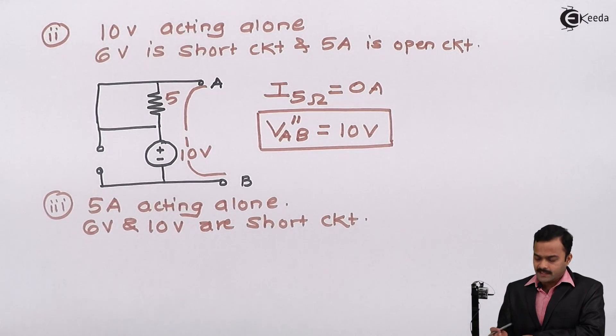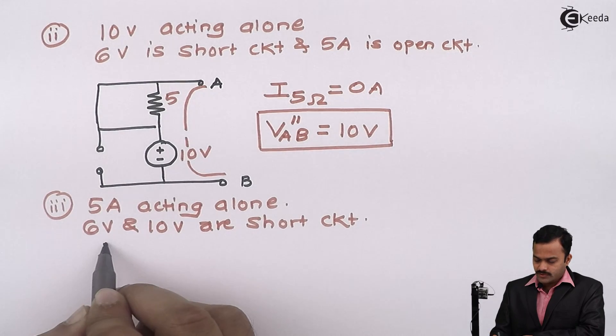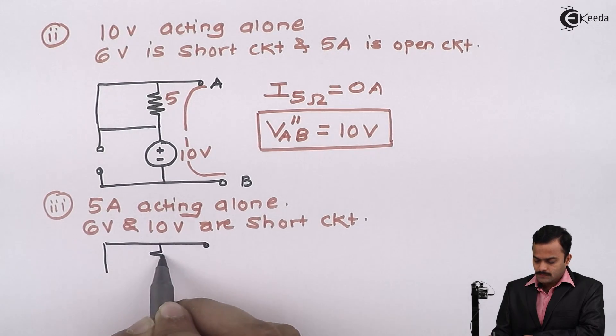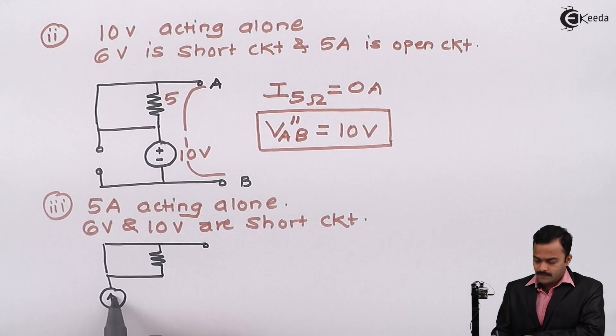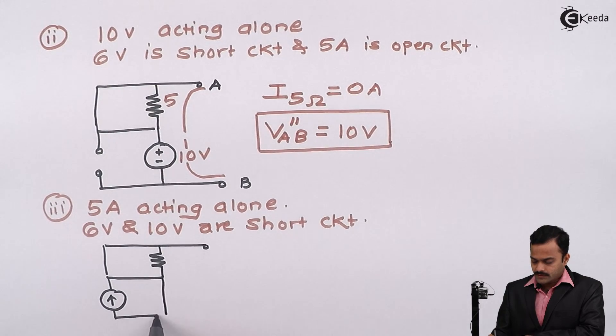So the modified circuit diagram will look like this. 6V is shorted, resistance will remain as it is. Only source acting is a current source of 5A. This will appear, and this 10V is also short circuited.